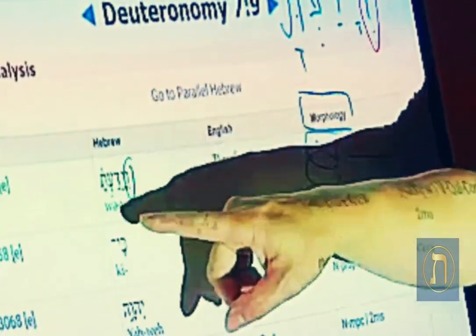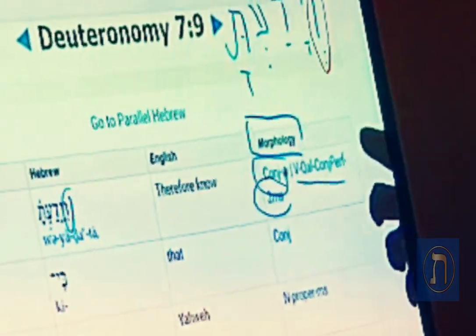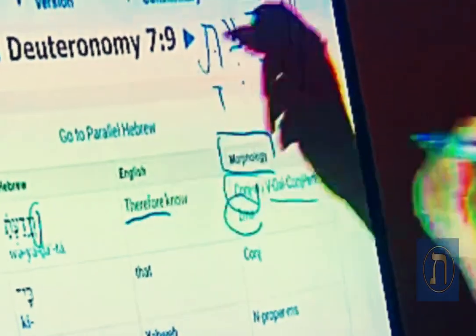So it could be and, and in this case the Bible chose to translate it in English as therefore. No key that Yahweh, God, Eloheka, ka is your, your God.